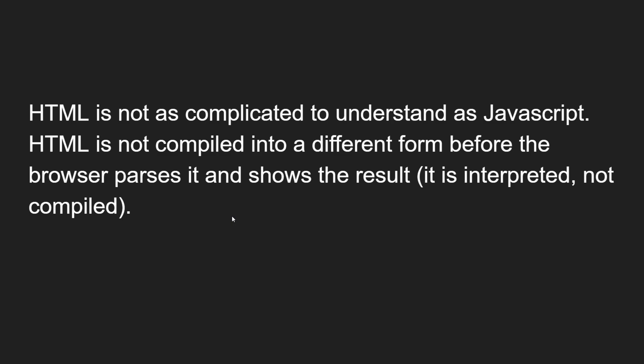HTML is not compiled into a different form before the browser parses it and shows the result. Compared to JavaScript or other programming languages, HTML is not that complicated. Languages like .NET or Java are compiled and converted into another form, whereas HTML is not compiled — it is actually interpreted, not compiled.